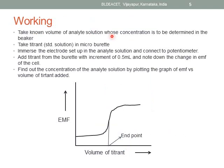To explain how it actually works: take a known volume of analyte solution whose concentration is to be determined in a beaker. A titrant of known concentration — a standard solution — is taken in a micro burette. Immerse the electrode setup in the analyte solution and connect it to the potentiometer. Add the titrant from the burette in increments of 0.5 ml. As the titrant is added, it undergoes reaction with the analyte solution and there is a change in concentration of the analyte, which is detected by the indicator electrode whose potential changes accordingly, and the EMF value of the cell also changes.